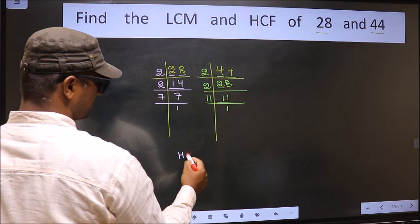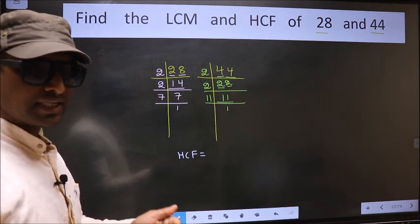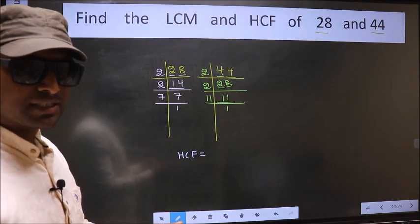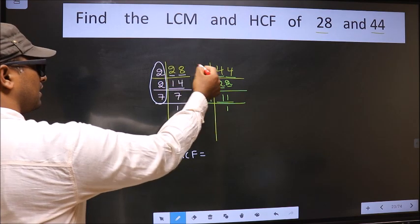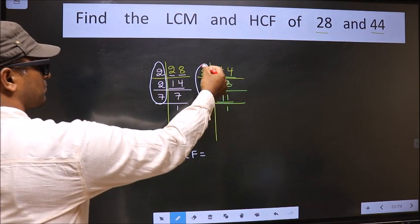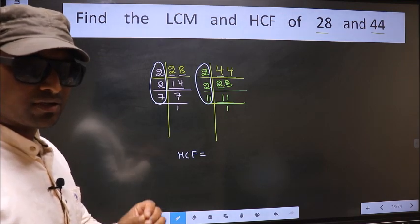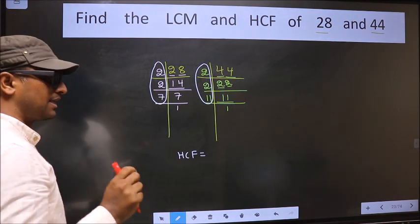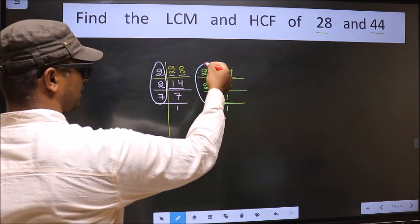So now our HCF is... HCF is the product of numbers which should be present over here and also here. I repeat, HCF is the product of numbers which should be present in these two places.